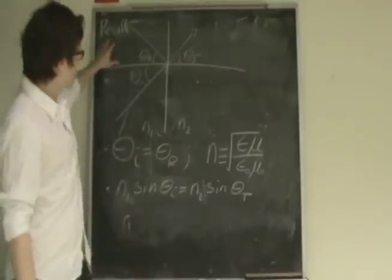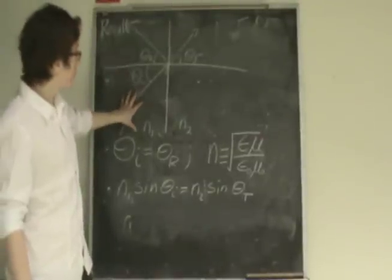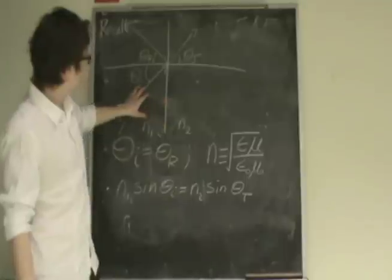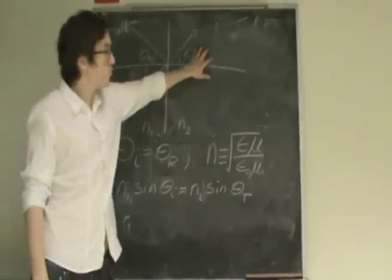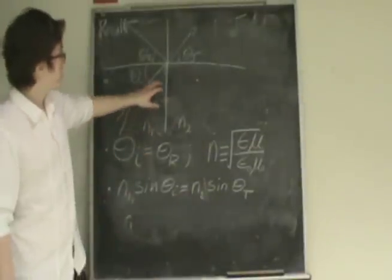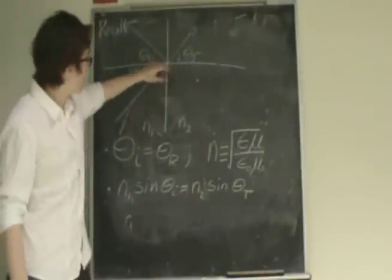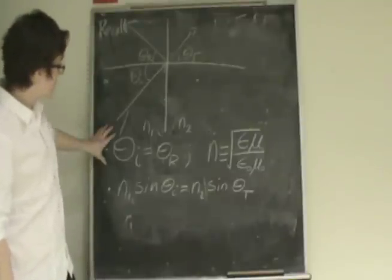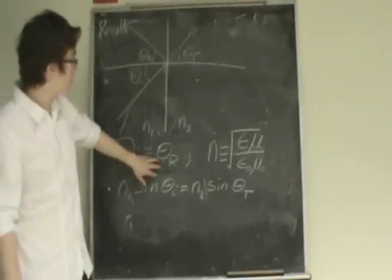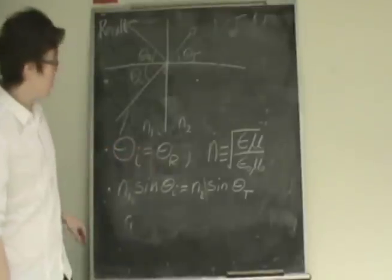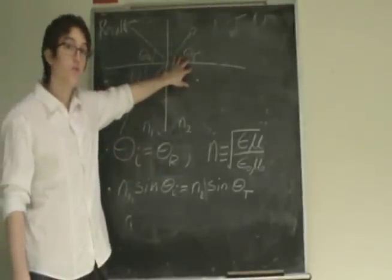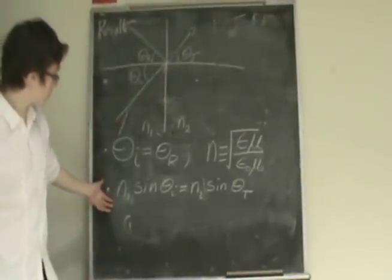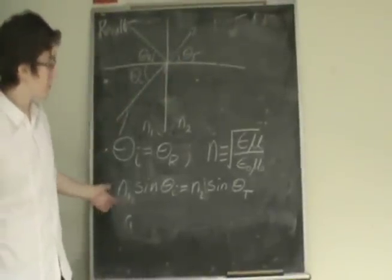As light propagates through a medium with index of refraction N1 and hits another medium with index of refraction N2, light will get both reflected and refracted. When light strikes an interface, the angle is measured normal to the plane of the interface. Following the law of reflection, the incident angle is equal to the reflective angle. However, the transmitted angle, or the refracted angle, follows the law of refraction, or Snell's law, which is the ratio of the relative index of refraction and the sine terms of each.